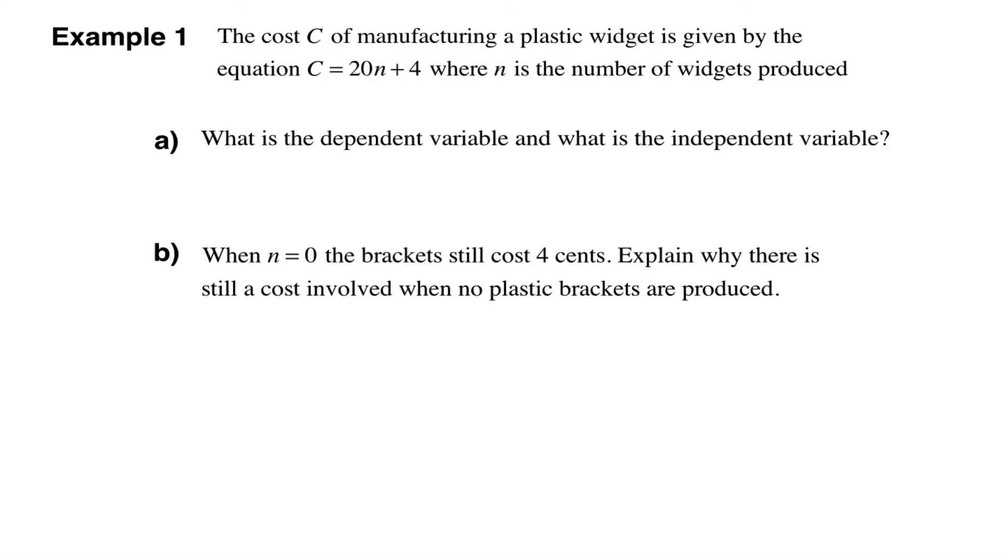Okay, another example. The cost C of manufacturing some plastic widget is given by the equation C equals 20N plus 4, where N is the number of widgets produced. And I gather C is actually in cents. What is the dependent variable and what is the independent variable? So when you're asked that sort of question, you're really considering which one depends on the other. And if you do that, you can see quite easily that the cost of manufacturing is dependent upon the number of widgets that you actually produce. So C is the dependent variable and N is independent.